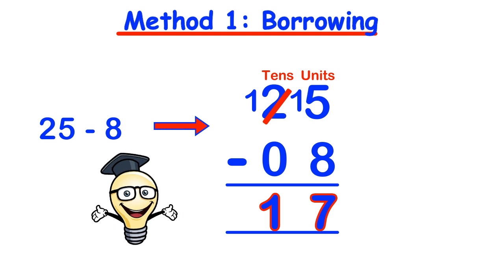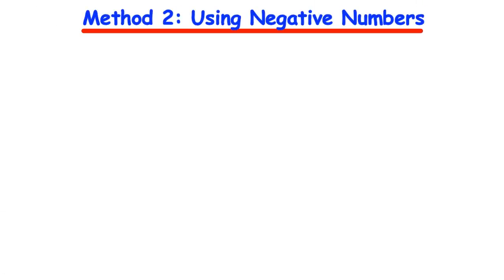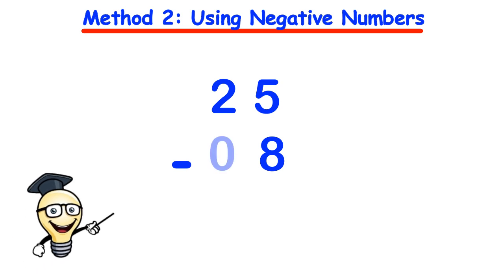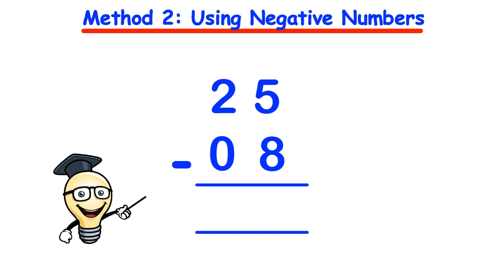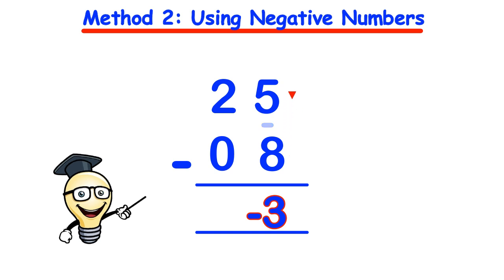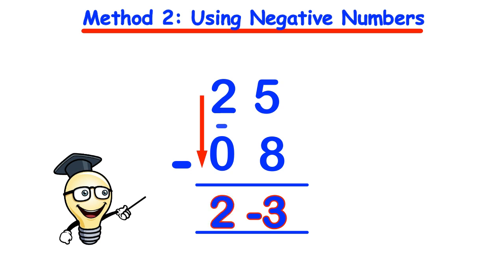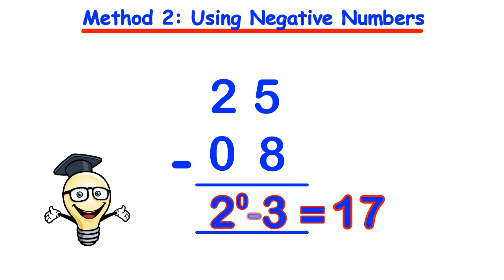This method is all well and good, but there are other methods which avoid borrowing and should definitely be explored. Let's consider using negative numbers, which also helps with practising negative numbers. Taking the same sum, 25 minus 8, we fill in the missing gap with 0. Starting from the unit side: 5 minus 8 gives us minus 3, so we put minus 3 in the answer line. Then in the tens column, 2 take away 0 gives us 2. We have 2 and minus 3 — that 2 represents 20, so 20 minus 3 equals 17, the same answer.